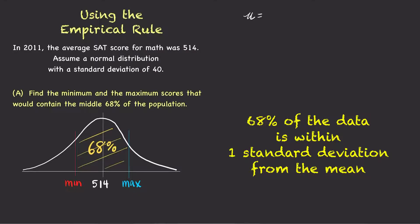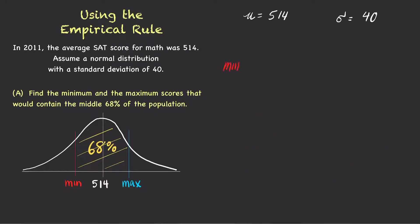Here, the mean is 514 and the standard deviation is 40. To find the minimum and the maximum scores that will contain the middle 68% of the population, simply subtract the mean by one standard deviation to get the minimum and add the mean by one standard deviation to get the maximum.